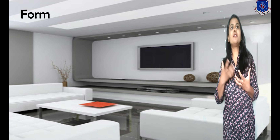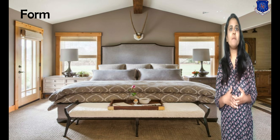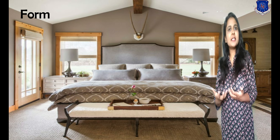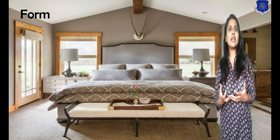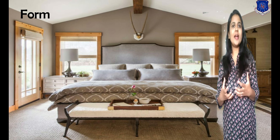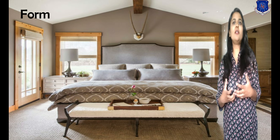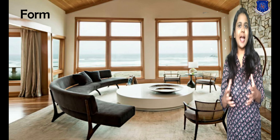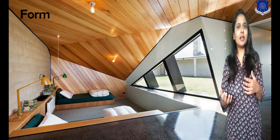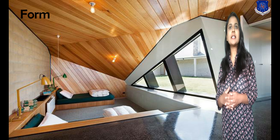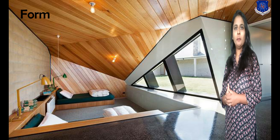Starting with the first element, which is form. The shape of an object is a form, such as square, rectangle, round, oval, etc. Form in a room should be harmonious. Rectangular shapes are more pleasing than square shapes. A square suggests a rational, stable form with no direction. A circle implies unity and completeness, whereas a triangle is a stable but dynamic form.